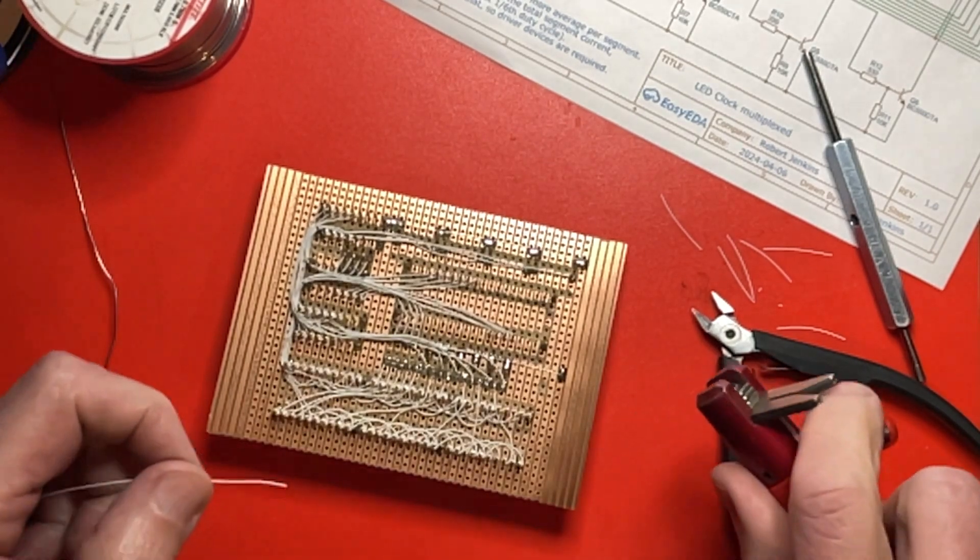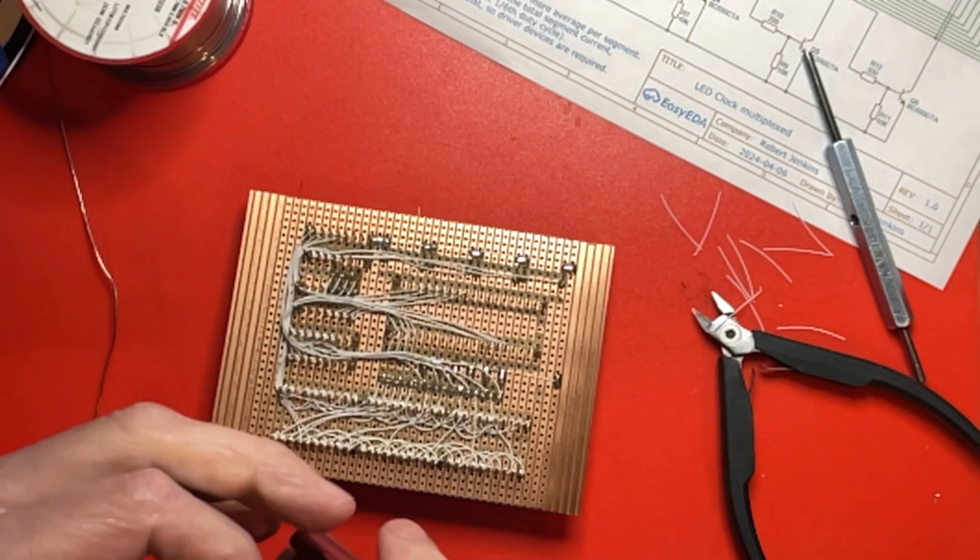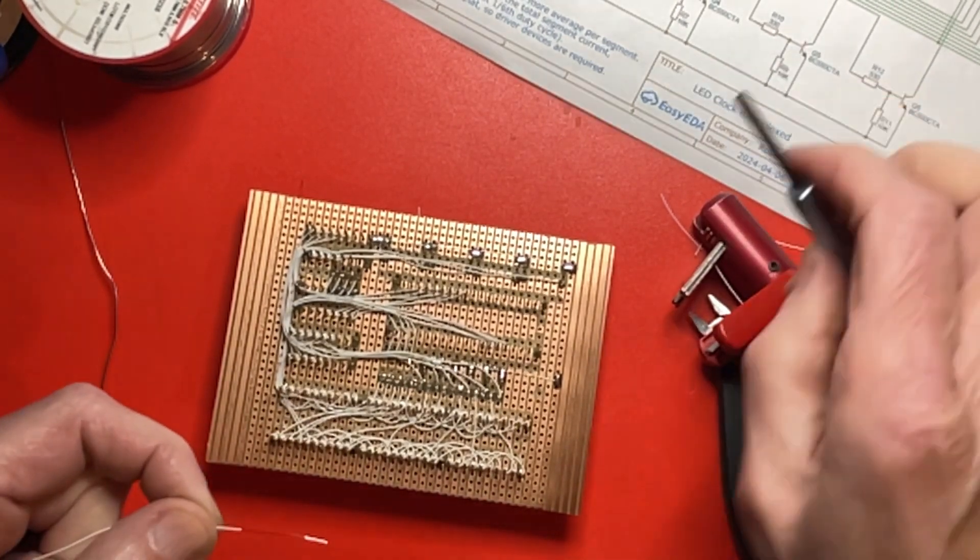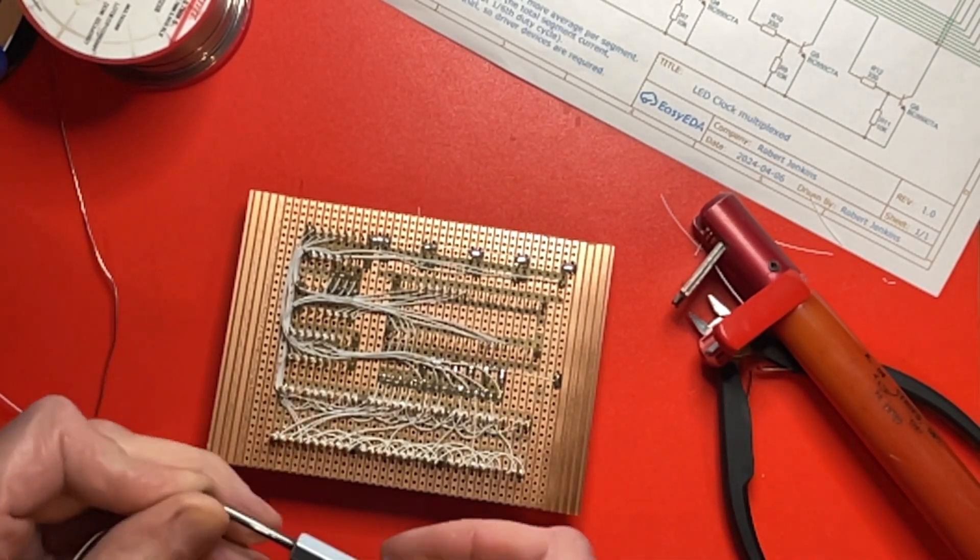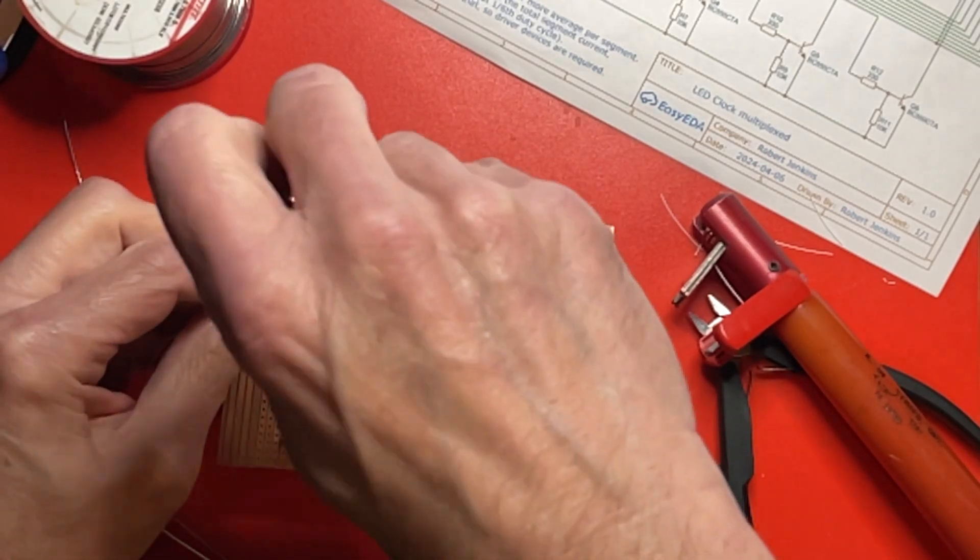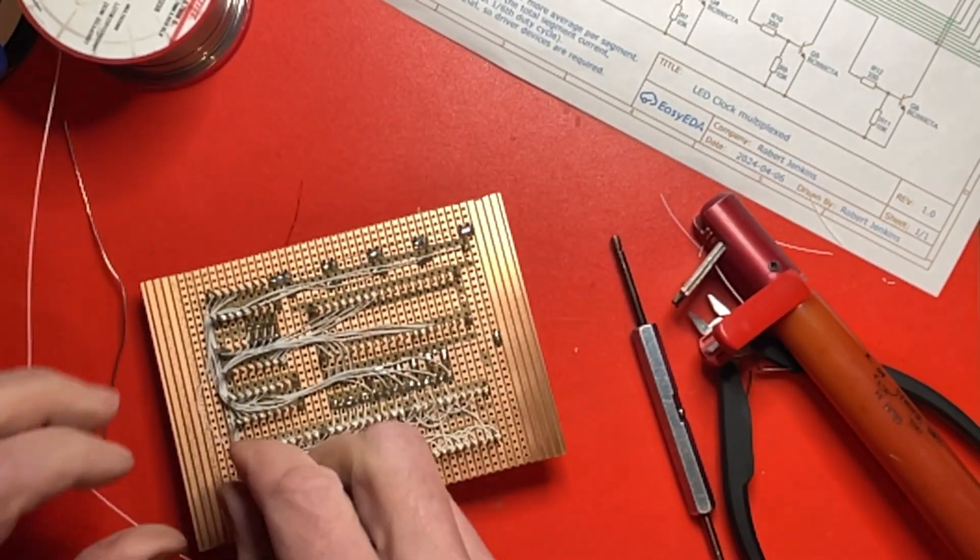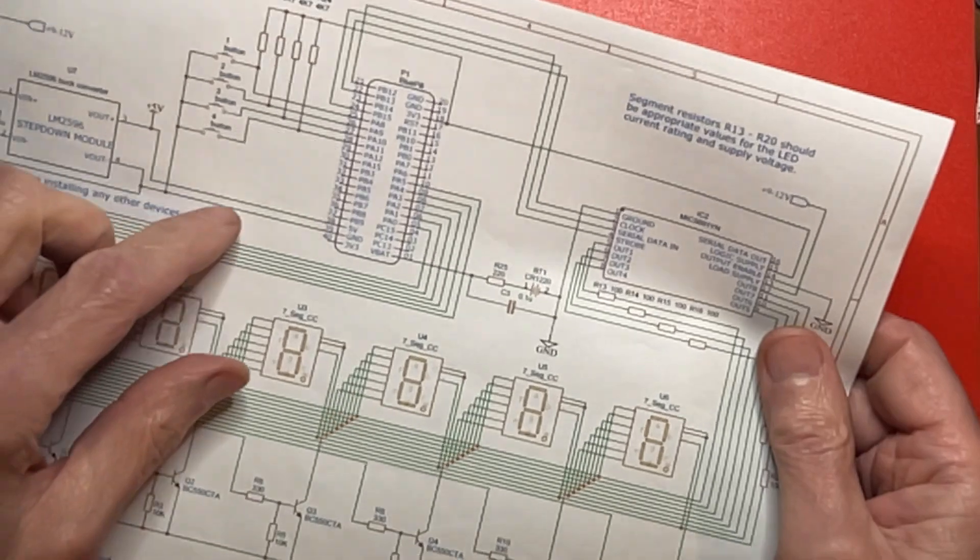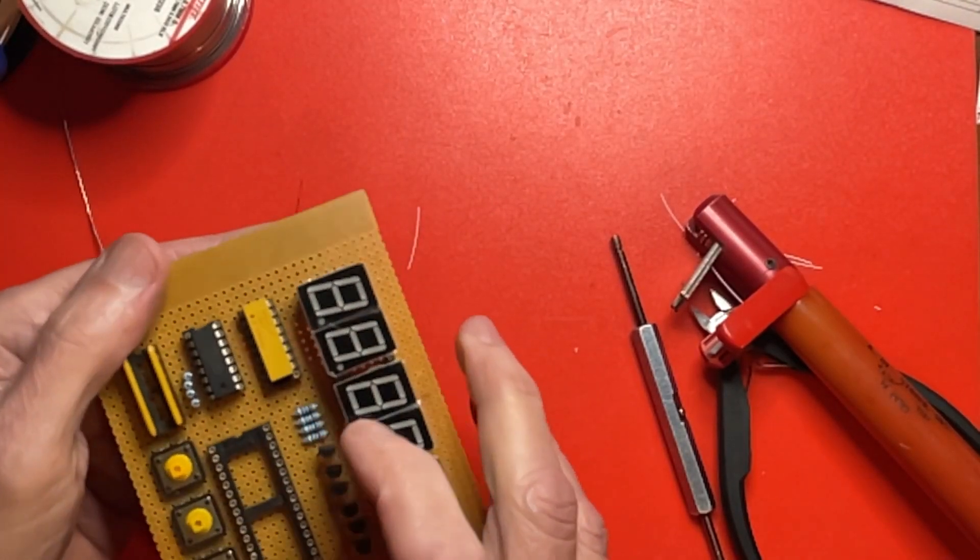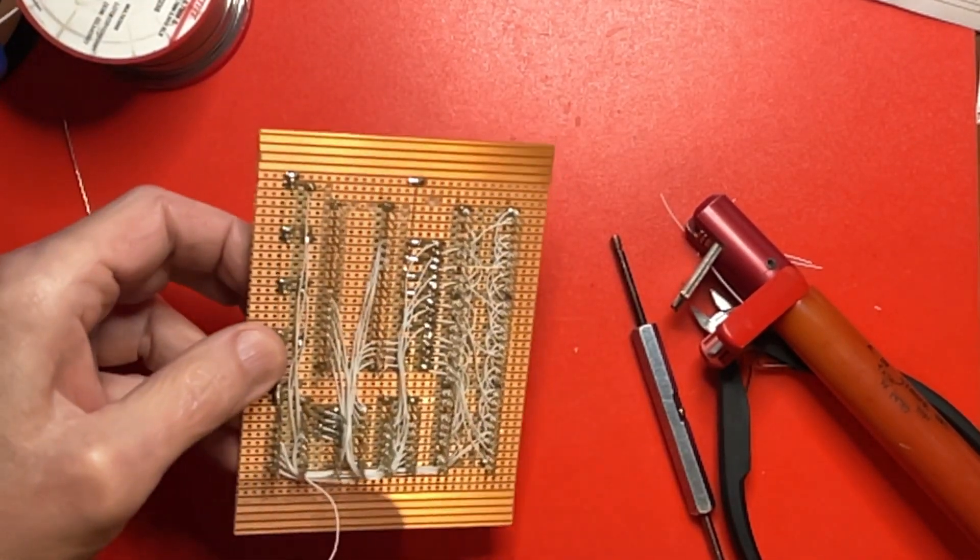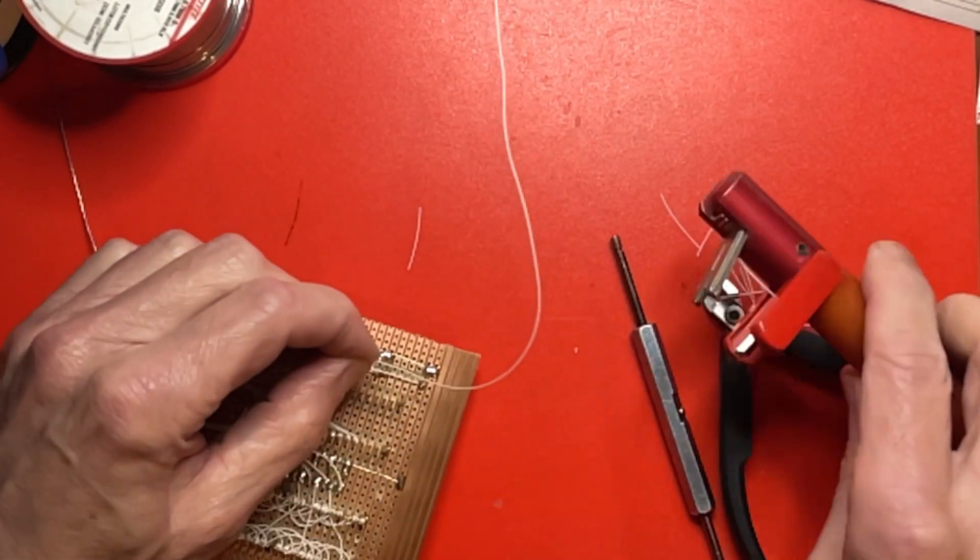Now it needs the pull-up resistor common pin connecting to the 3.3 volt output from that module. So that's that one. Pin one there goes to 3.3 volt, which is the third pin down on that side.